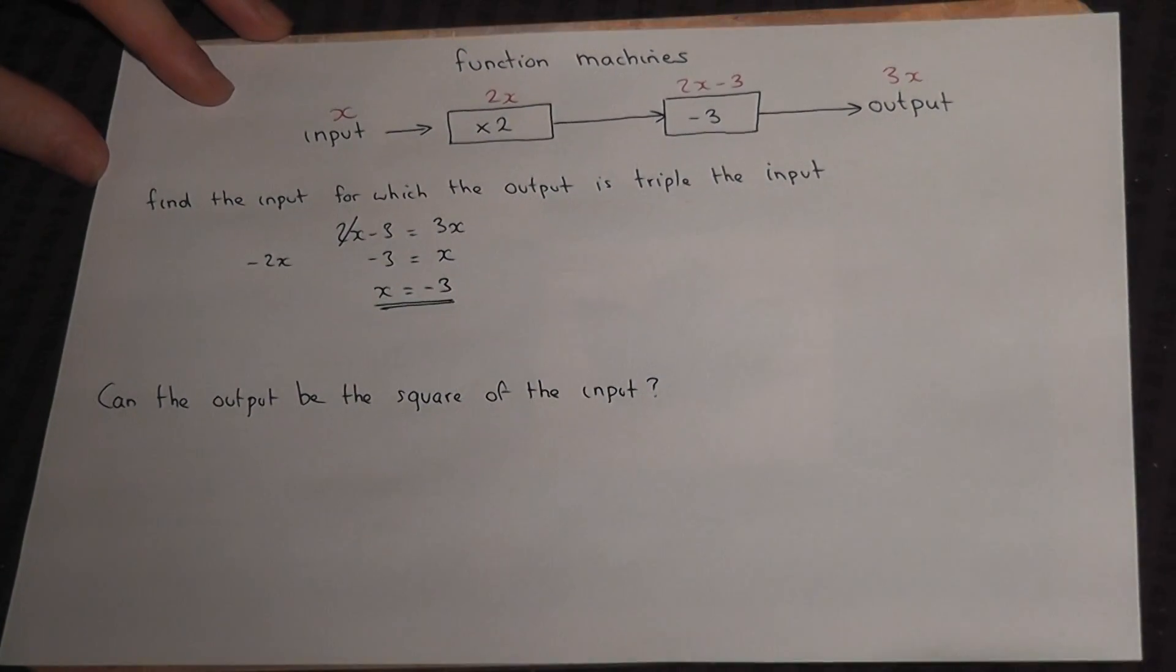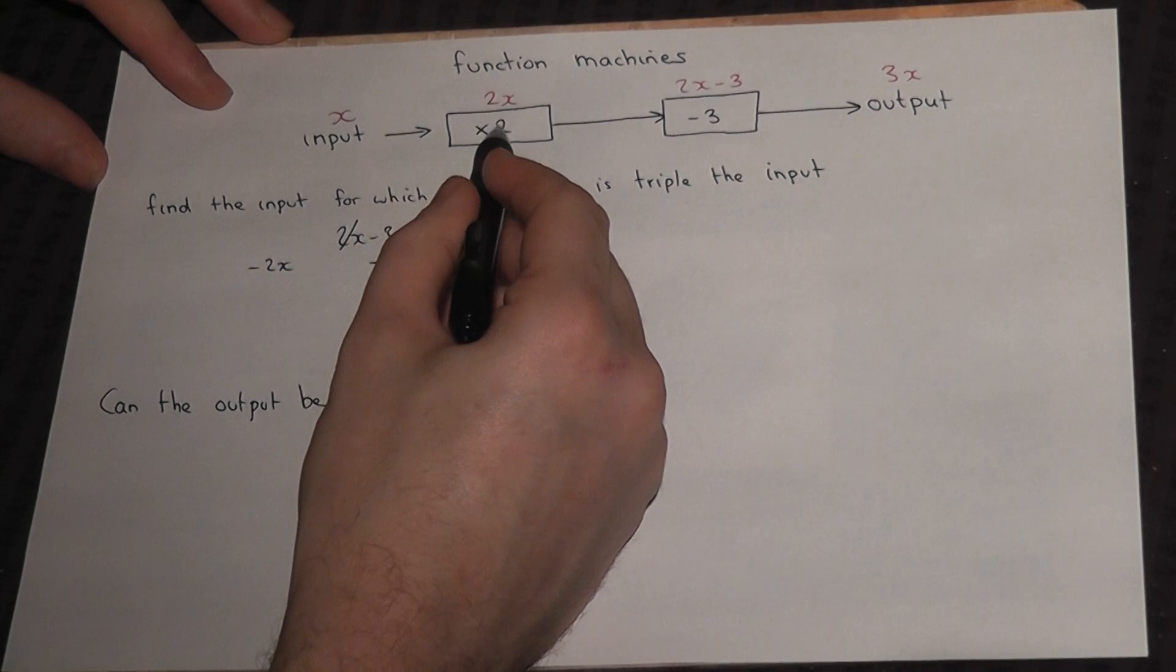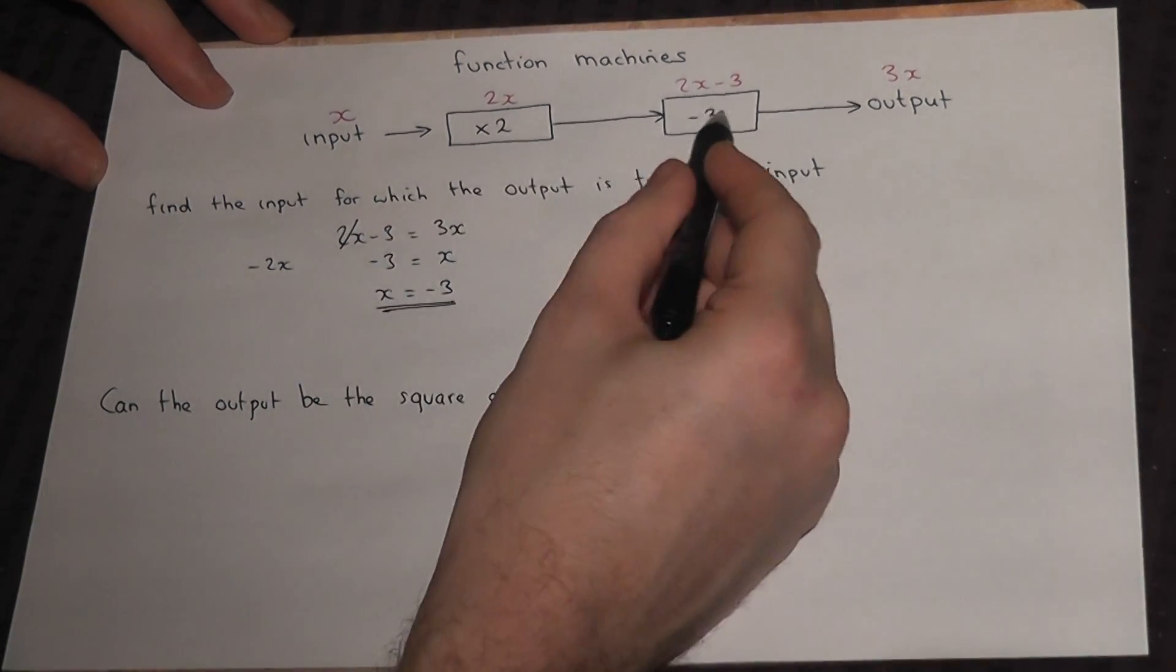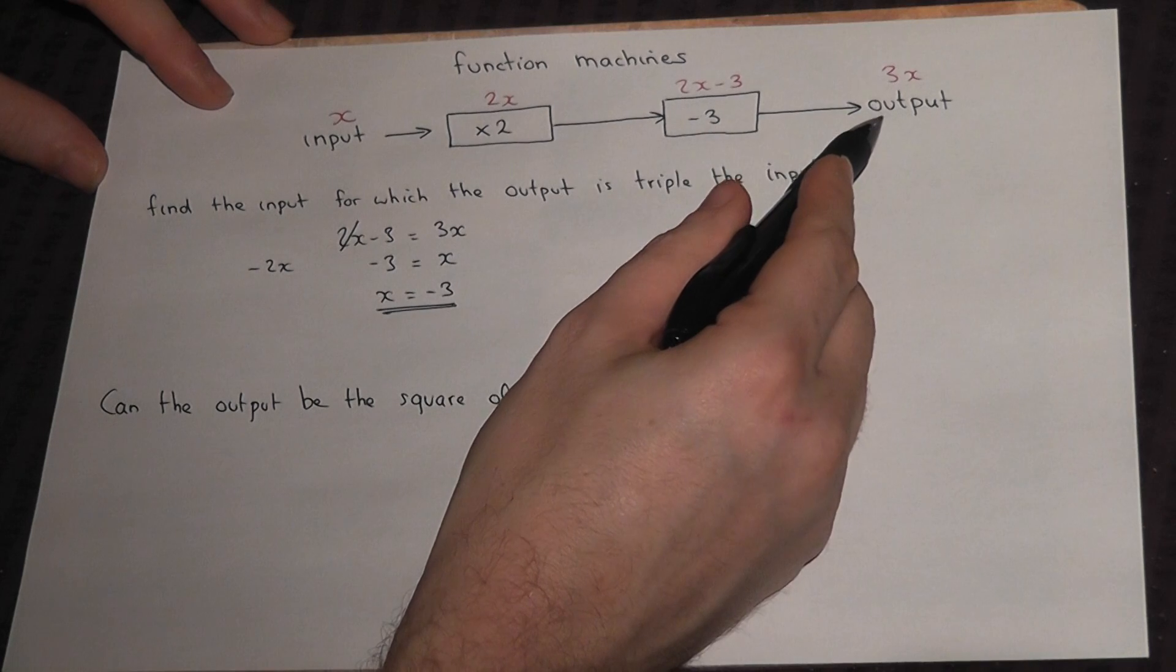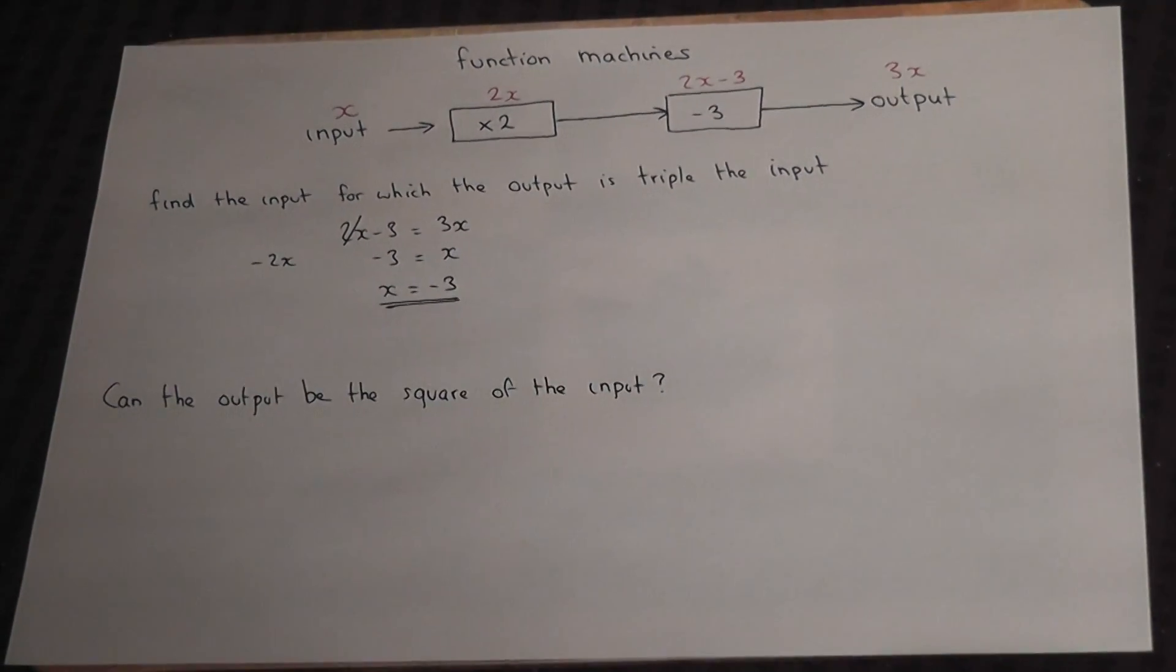If we check that, 2 times minus 3 is minus 6, take away 3 is minus 9, and the output is therefore 3 times the input.